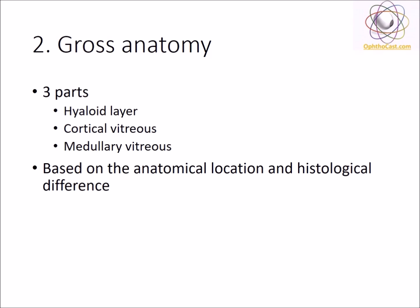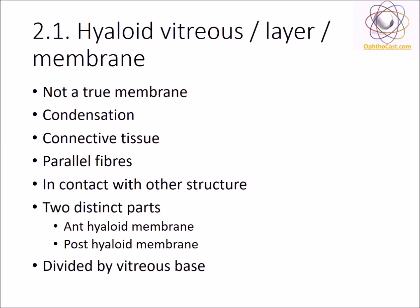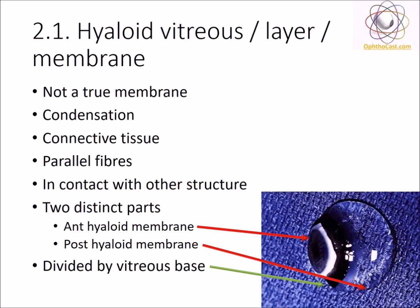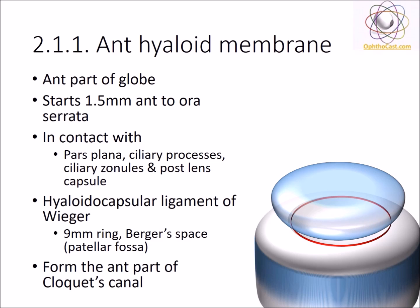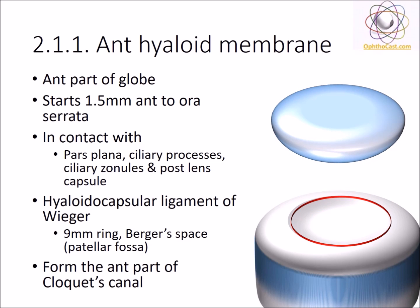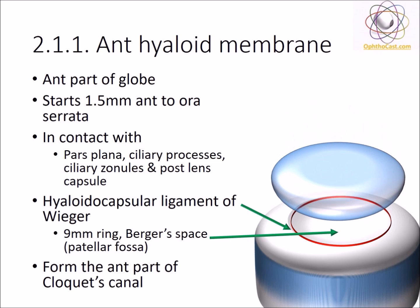There are differences in both location and histology. The hyaloid vitreous, also known as the hyaloid layer or membrane, is a condensation of the vitreous when it comes in contact with the neighboring structures. It is a pseudomembrane. The collagen fibers in this connective tissue lie parallel to the boundaries in this layer. The hyaloid vitreous is divided into the anterior and posterior parts by the vitreous base. The anterior hyaloid membrane starts 1.5 mm anterior to the ora serrata. Over this membrane lies the lens, sitting in a depression, and the surrounding area of contact forms a condensed ligament. The space is called Berger's space and the ligament is the hyaloidocapsular ligament of Wieger. Berger's space is continuous with Cloquet's canal.